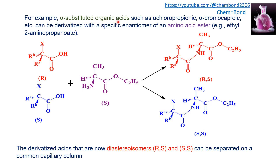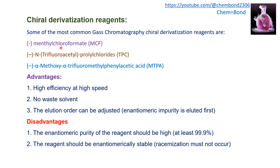An example includes alpha-substituted organic acids such as alpha-chloropropanoic or alpha-bromocaproic acids, which are derivatized with a specific enantiomer of an amino acid ester — ethyl-2-aminopropanoate. This produces a diastereomeric mixture: R and S combine to give RS, and S and S combine to give SS — two diastereomers. The derivatized acids (diastereomers R and S) can then be separated on a common capillary column. Chiral derivatives include methyl chloroformate, triacetylpropyl chlorides, and methoxy-alpha-trifluoromethylphenylacetic acid.